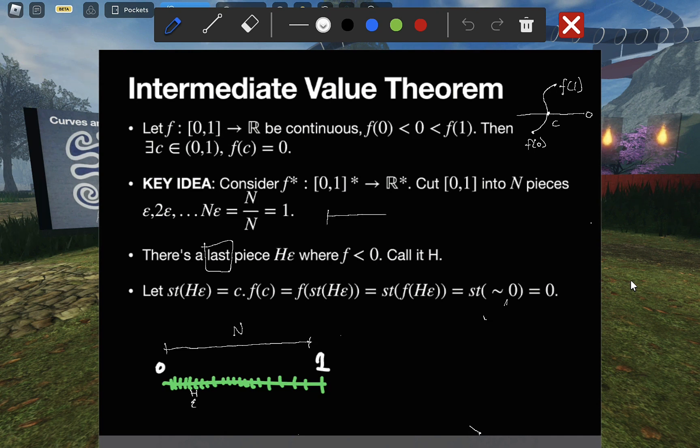And we're going to do this by marching through the values of f one epsilon at a time. By hypothesis, f of zero is some value less than zero. And because zero is a standard number, its image is also some standard number. Then we march forward by one epsilon and we look at f of epsilon. Because f is assumed to be continuous,